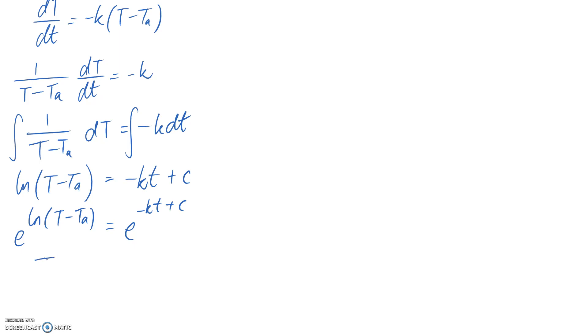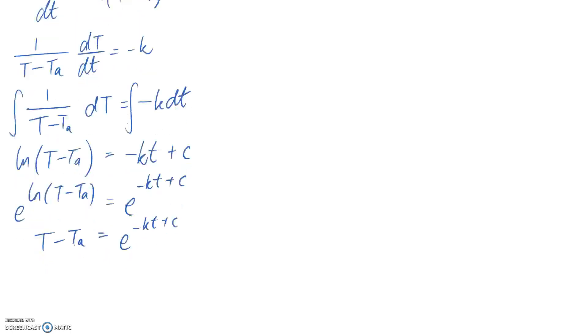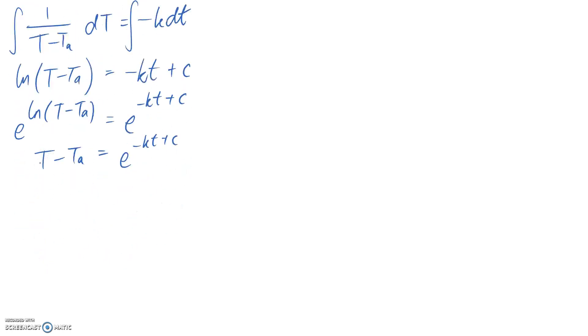E and log cancel each other out, so we're just left with the T - TA. And then I want T on its own, so I can shift this to the other side, which means I just get my little plus TA on the end.